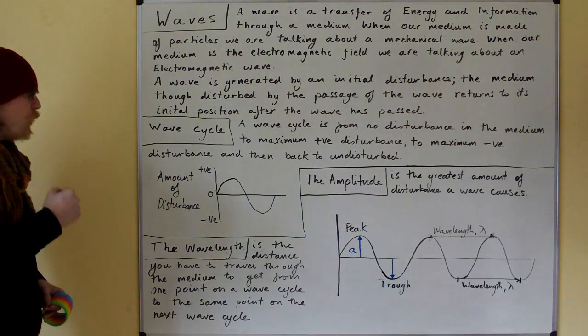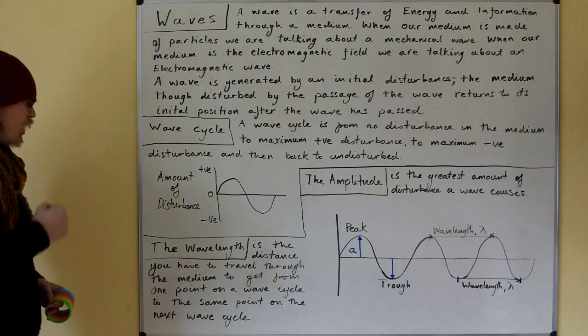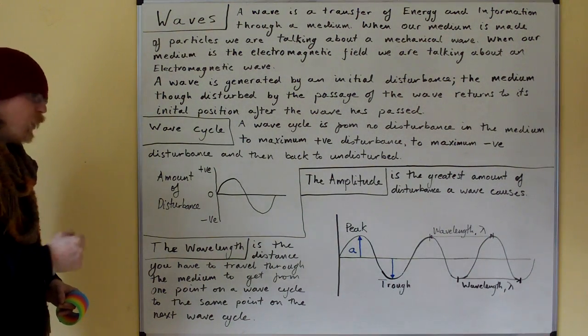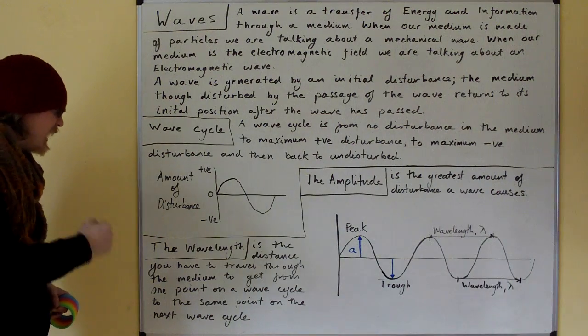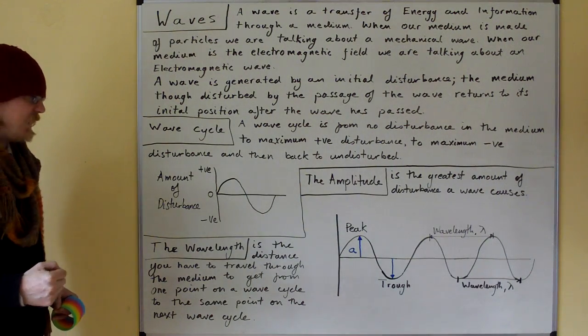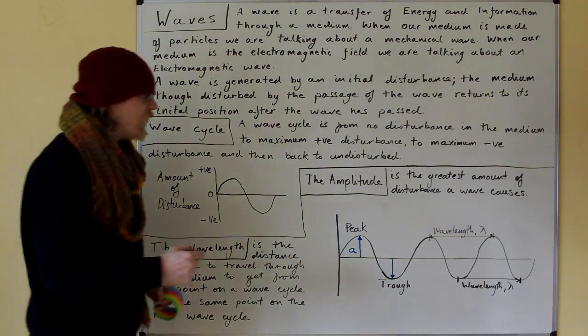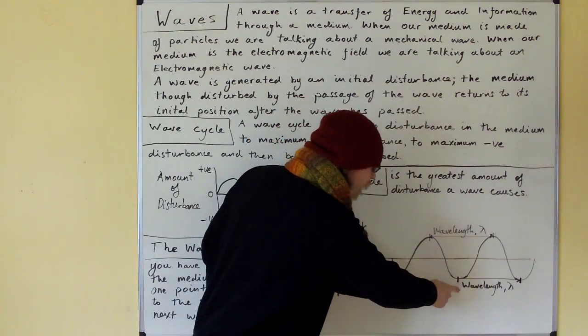The wavelength. The wavelength is the distance you have to travel through the medium to get from one point on the wave cycle to the same point on the next wave cycle. So we could take any point but we generally take the peak or the trough.